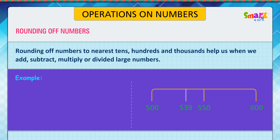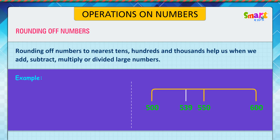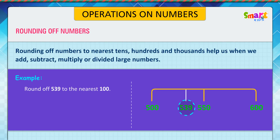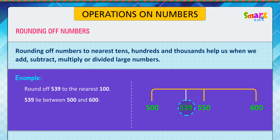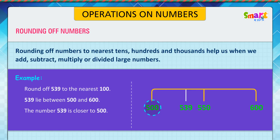Another example: round off 539 to the nearest 100. 539 lies between 500 and 600. The number 539 is closer to 500. Therefore, we round it off to 500.